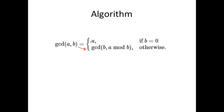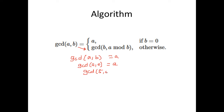First, try to understand the first condition. GCD of a, b is equal to a when b is 0, or otherwise we can write it as GCD of a, 0 is equal to a. We will understand this if we use an example: GCD of 5, 0 is nothing but 5, because 5 divides 5 and 5 divides 0.